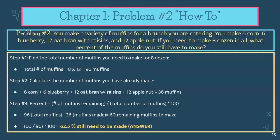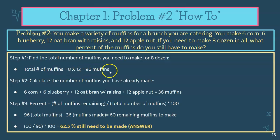Again, you can't answer that question until you do some calculations first. So step one, you're going to find the total number of muffins you need to make for eight dozen. There are 12 in a dozen, so eight times 12 — you need a total of 96 muffins. In step two, you're going to calculate the number of muffins you already have. You have six corn, six blueberry, 12 oat bran with raisin, and 12 apple nut. When you add them all together, you have 36 total muffins.